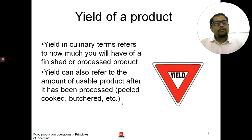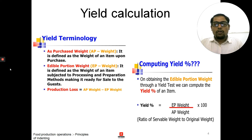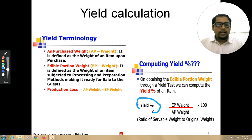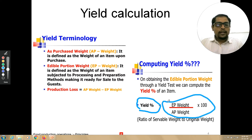There is a formula for calculating the percentage of yield. Let me highlight it using the skyboard. The yield percentage is calculated by a simple formula: EP weight divided by AP weight, multiplied by 100.